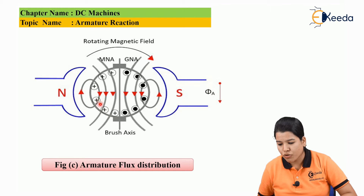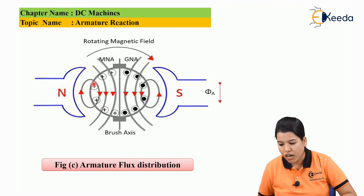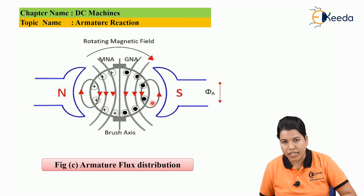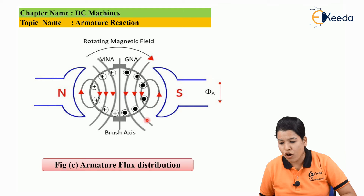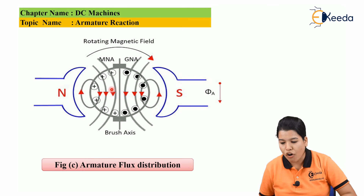The direction of flux for the north pole conductors is shown, and a similar direction is shown for the south pole conductors. As all the conductors under the north pole carry the same current, the direction of flux for all those conductors is the same, and the resultant direction of all the conductor flux is in the downward direction. Similarly, all the conductors under the south pole carry the same current, so the resultant flux of all conductors under the south pole also has the same direction — downward.